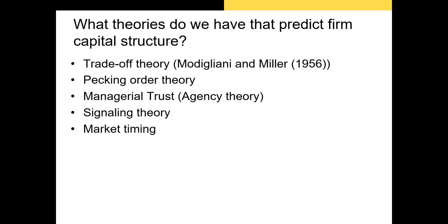As you undoubtedly saw in part one of this capital structure lecture, an increase in leverage can often boost firm value. So the obvious question is, why don't all firms borrow as much as they can? Well, beyond a certain point, borrowing can actually decrease firm value as a firm's credit rating falls and the cost of equity rises due to the risk of the firm not being able to pay back its creditors. This means that there should be some ideal capital structure that a firm should have, and there are many theories in finance that give us some indication of what that should be.